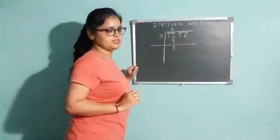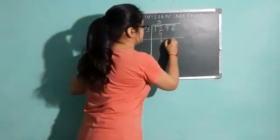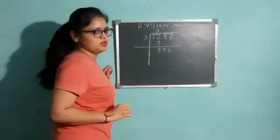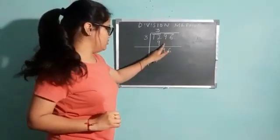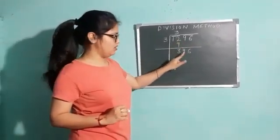After that, next step is bring down the next pair. Next pair is 96. In one step, we bring down 2 digits, not 1 digit. We bring down 2 digits.